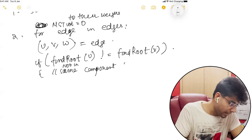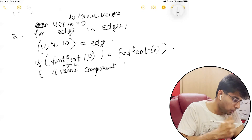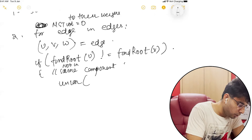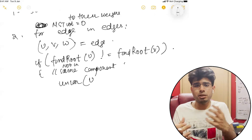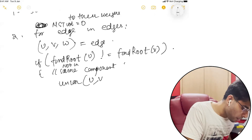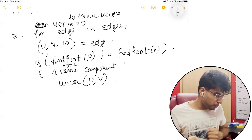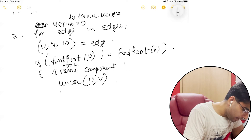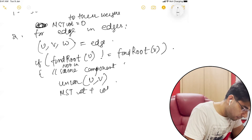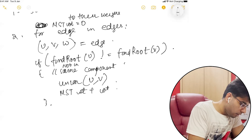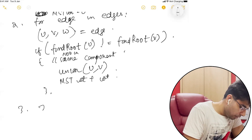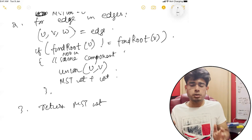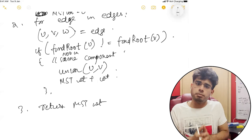If they're not in the same component, that means you can take the edge. Therefore, you do a union — call the union function. I'm not going to write the union function again since I've covered that in the previous video. So: union of U and V, and then add the weight to your MST weight variable. At step 3, return MST weight. This is what Kruskal's algorithm is all about.